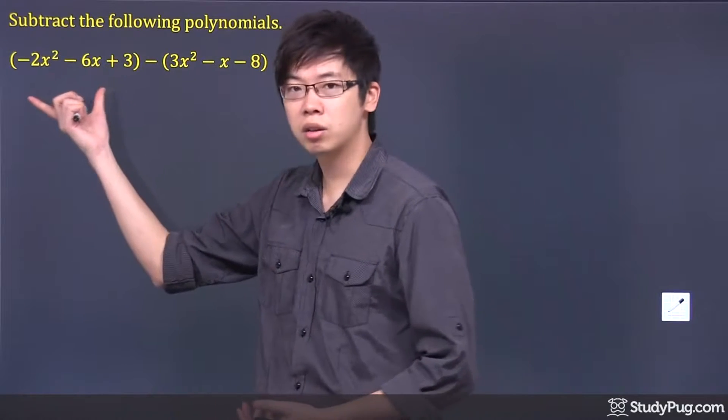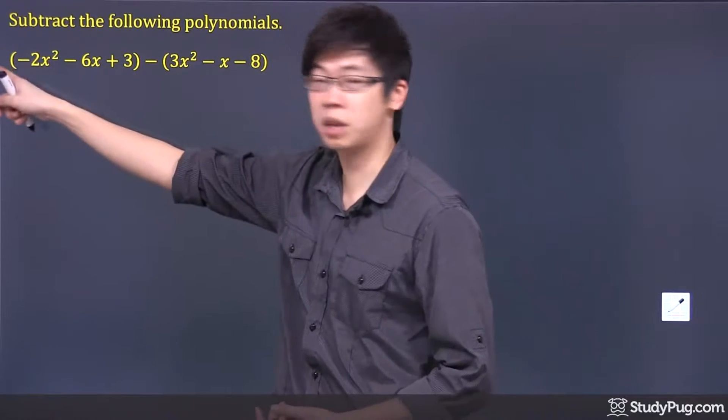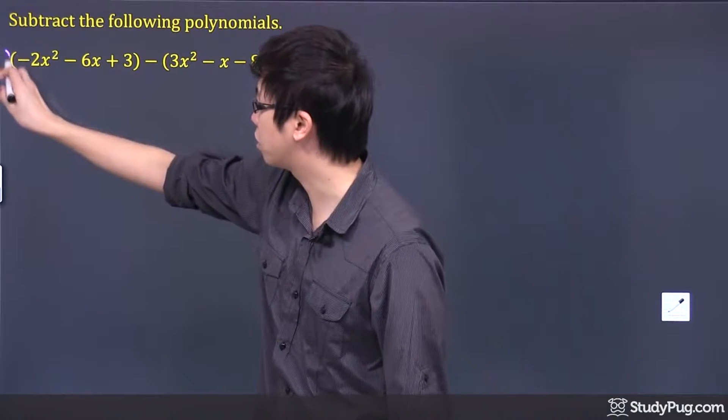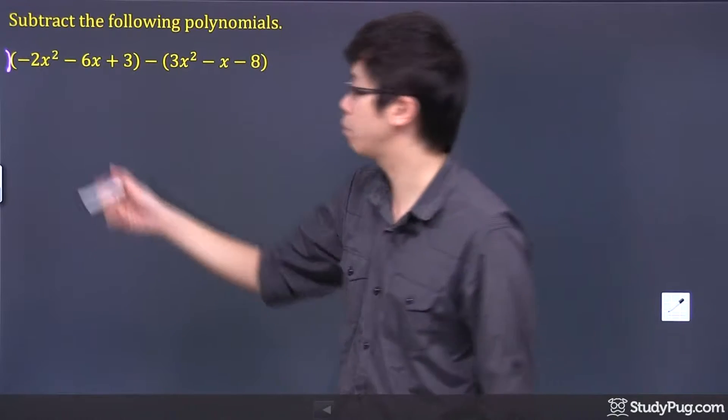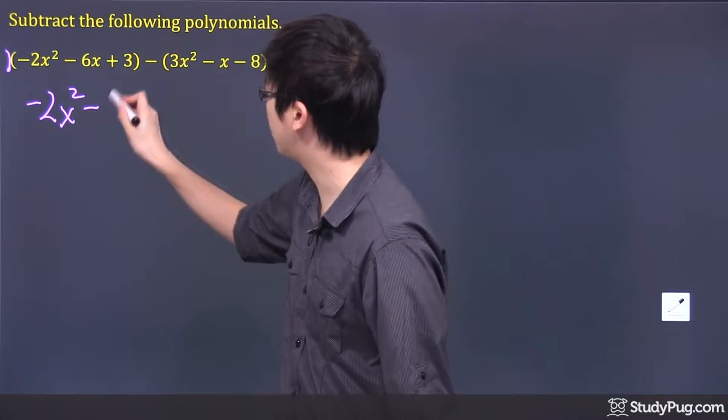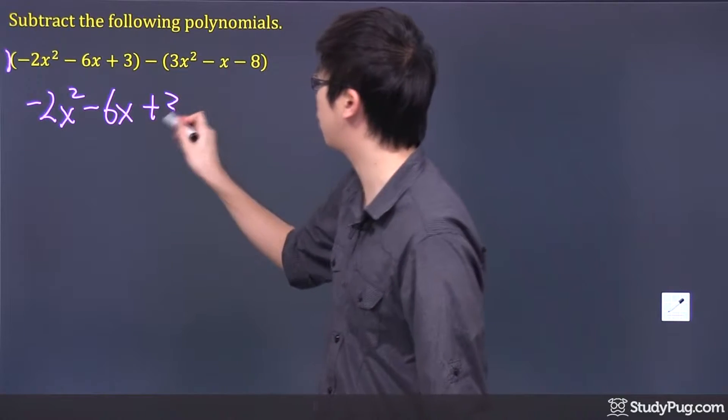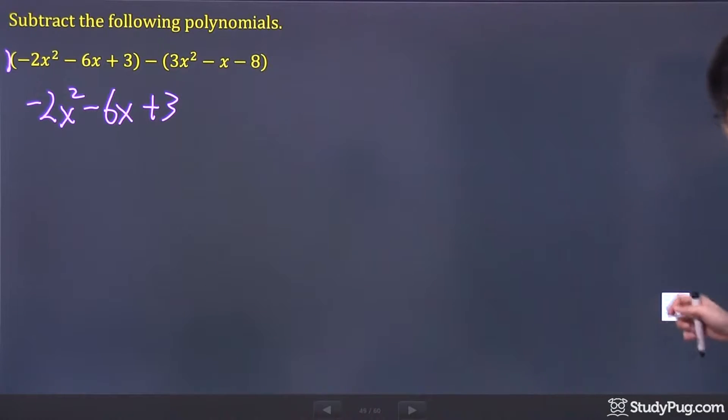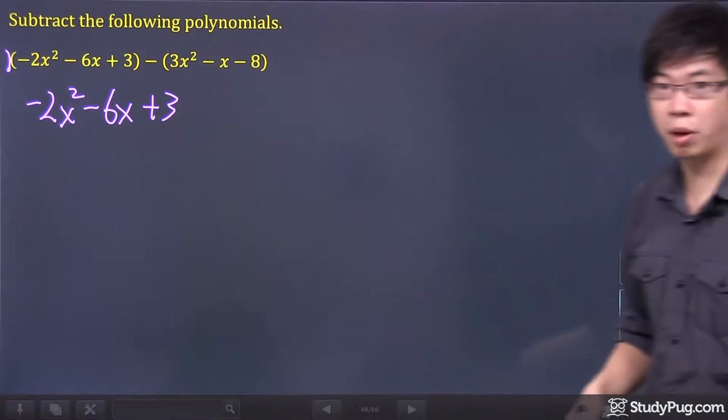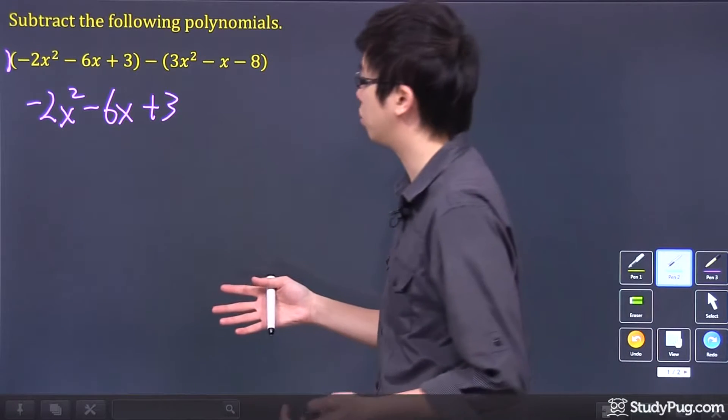Now, the first one right here, there's nothing you can do with the outside anyway because there's a one right here typically, but nothing happens. So since there's nothing you can do about it, you're just going to copy down the very first bracket. That means you have to drop the brackets because there's nothing that we're going to do.